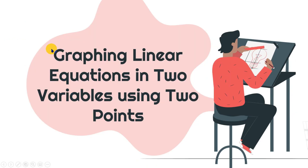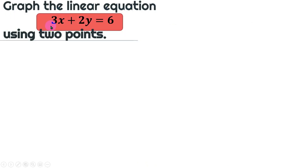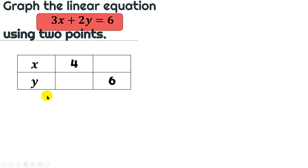Now, let's start our lesson about graphing linear equations in two variables using two points. Our first example: graph the linear equation 3x + 2y = 6 using two points. We're going to graph the given linear equation using two points. We have a table where the value of y sub 1 and x sub 2 are missing. We need to use our algebraic knowledge on how to evaluate our equation to find those two points to plot on the Cartesian plane.